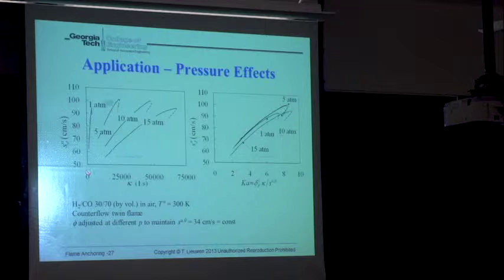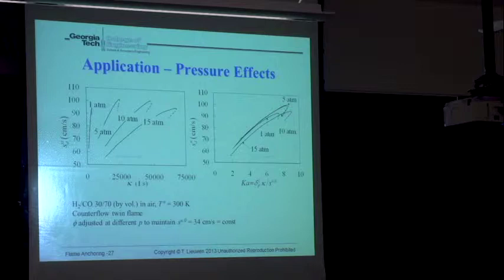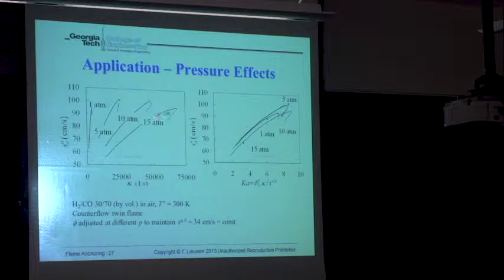These calculations are at different equivalence ratios because we adjusted the equivalence ratio to maintain a constant unstretched flame speed. Remember that flame speed roughly goes as 1 over square root of P, so we run the 15-bar case at a higher equivalence ratio than the 1-bar case, so theoretically these curves should all converge to the same value. We ran it over a broad range of stretch rates — it's linear at first, then becomes nonlinear and bends over. That bending is extinction, which we'll discuss next.